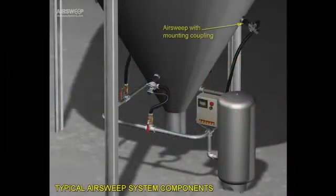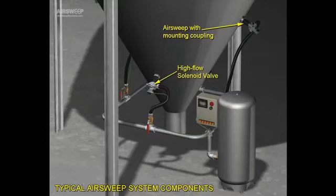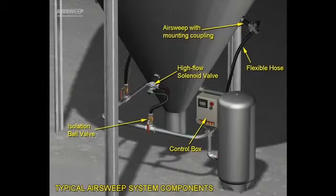Typical components of the air sweep system include the air sweep nozzles and high flow solenoid valves, a sequence controller, flexible hose connections, isolation valves, compressed air header piping, and an air reservoir tank.